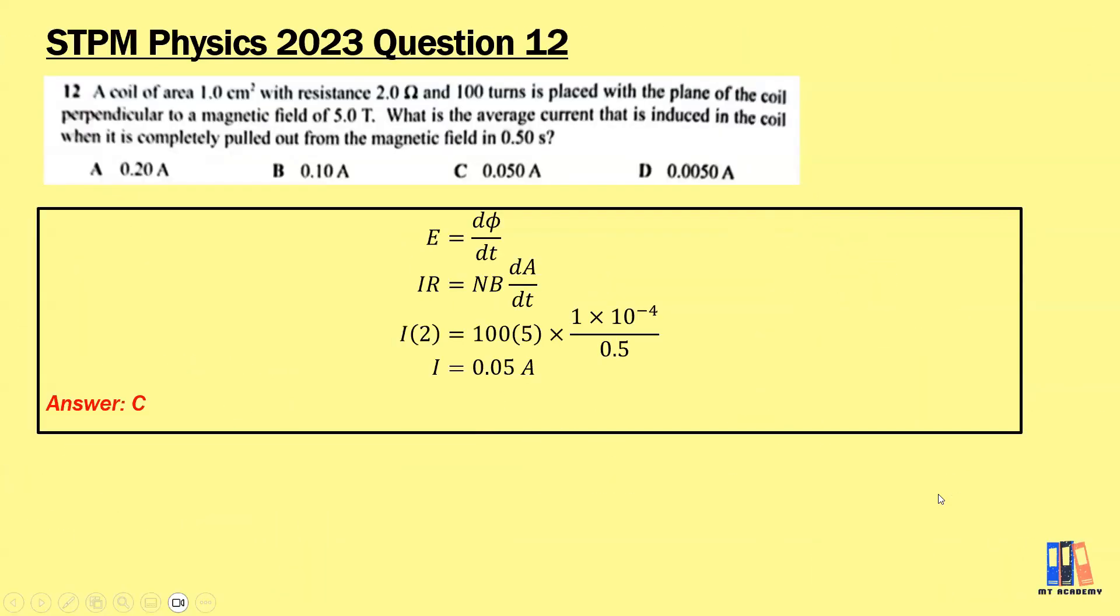We shall go through one question in past year 2023, Question 12. A coil of area 1 cm² with resistance 2 ohms and 100 turns is placed with the plane of the coil perpendicular to a magnetic field of 5 tesla. What is the average current induced in the coil when it is completely pulled out from the magnetic field in 0.5 seconds? The thing that is changed is the area. We pull out means we have a complete 1 cm² pulled out in the duration of 0.5 seconds. So we have dA/dt. We also don't forget that VKE equals IR, so this is how you can get the current induced in the coil. Put all those values and you should be able to obtain the current is 0.05 ampere. The answer is C.